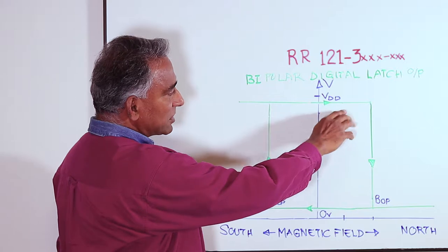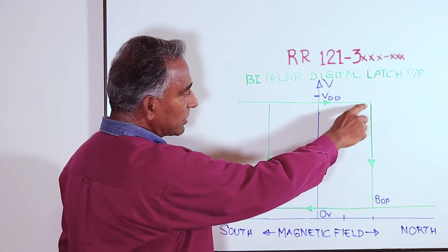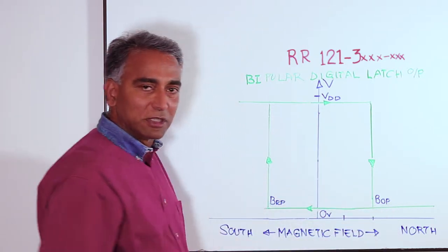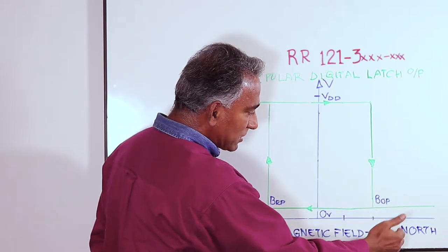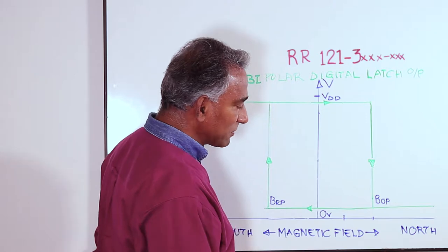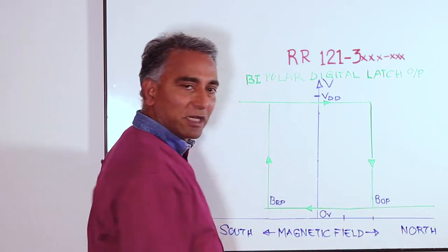the output of the sensor switches from off state or a digital high to an on state which is a digital low. As the magnet approaches even further increasing the magnetic field strength further, the output remains at a digital low.